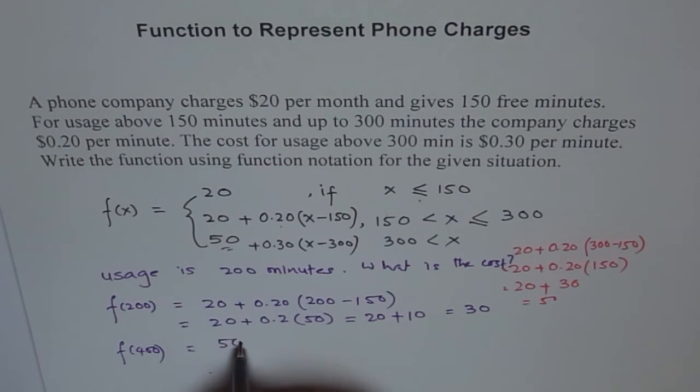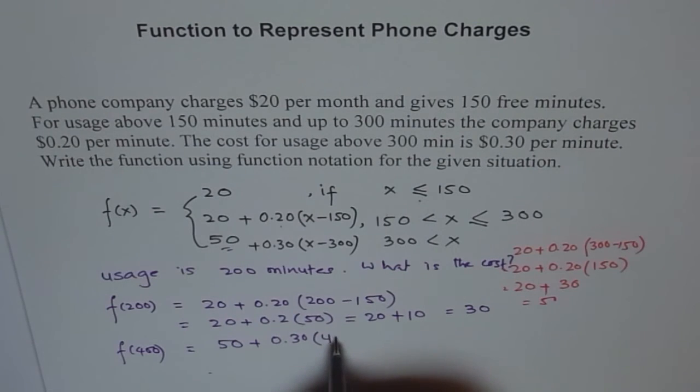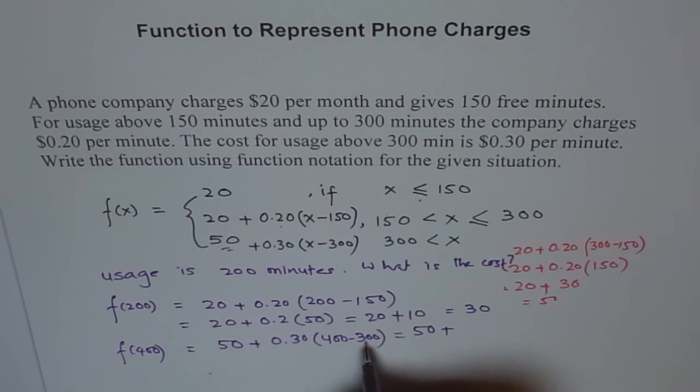For 400, it should be 50 plus 0.30 times 400 minus 300. And then you have to calculate the cost from here, so it is 50 plus, and 400 minus 300 is 100, 100 times 30, 0.30.